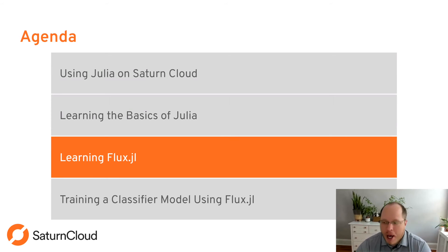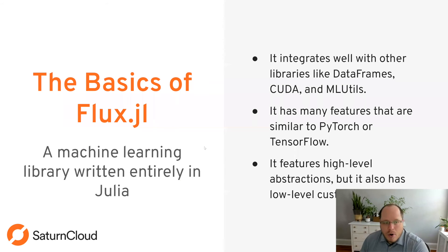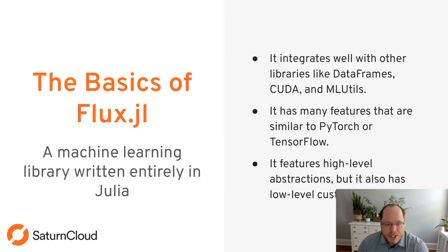Now we're going to throw you in the deep end and do some machine learning — training a classifier model using the Flux.jl package, which is a machine learning package for Julia. The cool thing about Flux.jl is it's written entirely in Julia. So unlike a lot of other machine learning packages, it's not just a translation of TensorFlow — it's native Julia. That means it integrates really well with other Julia libraries like DataFrames, CUDA, and MLUtils.